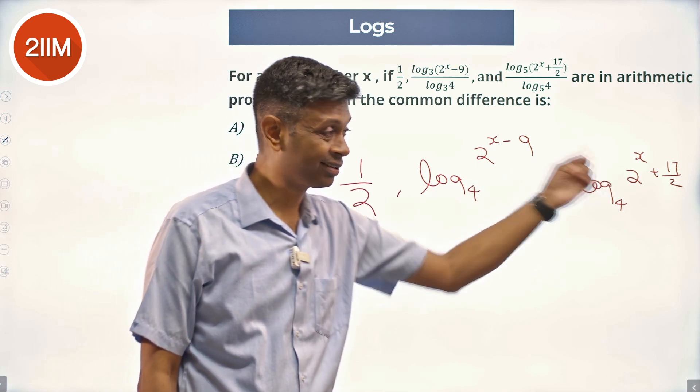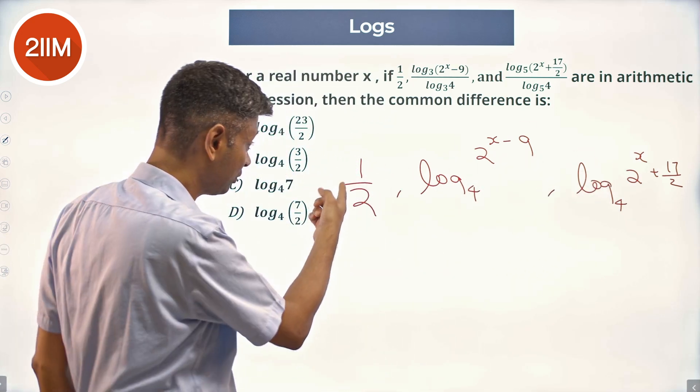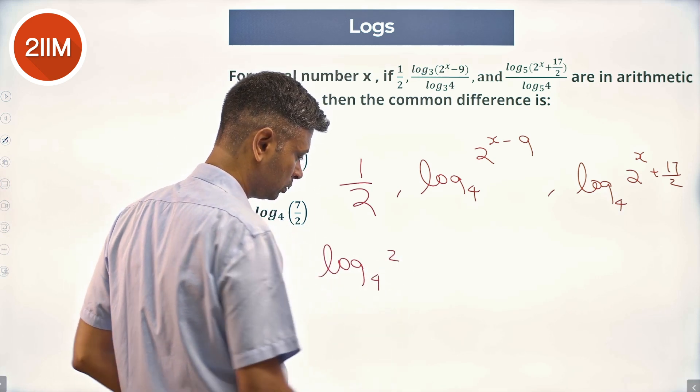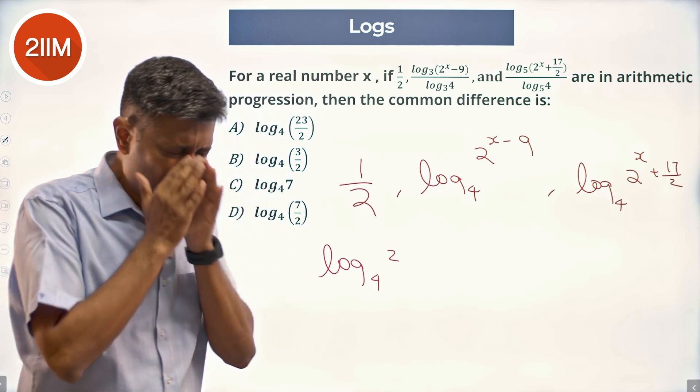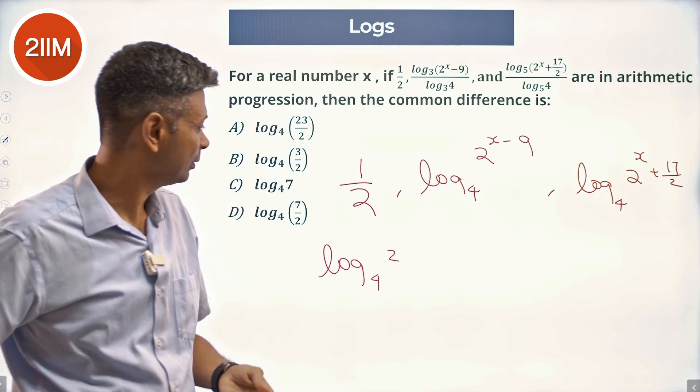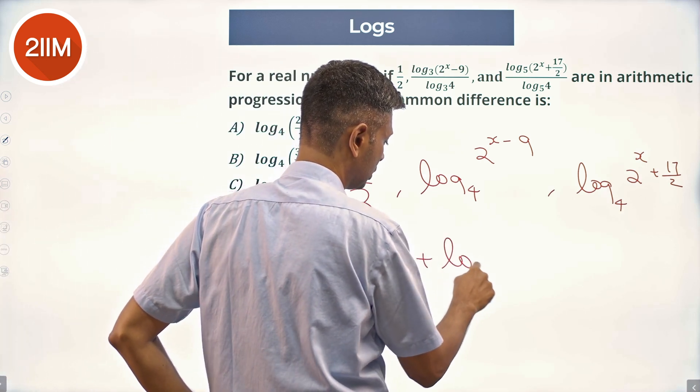That means this plus this equals 2 times this. So half - I'm going to write this as log₄(2), that is half. Excuse me - log₄(2), which is half, plus log...